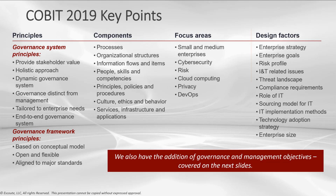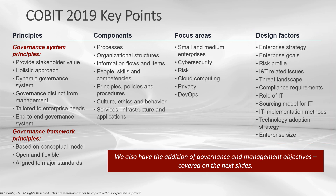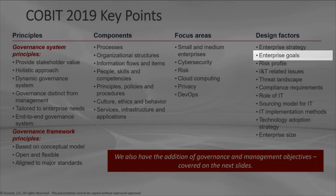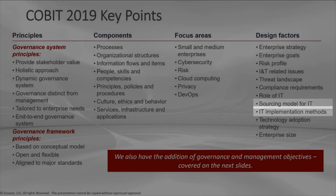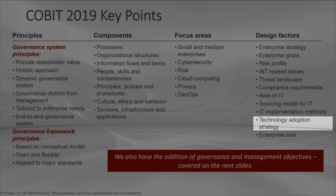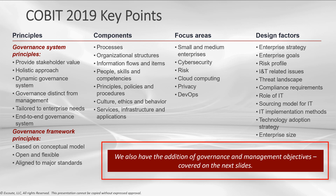One of my favorite areas are what we call design factors. Everybody wants a tailored governance system, and these design factors are attributes of your organization. Depending on what these attributes are and how you answer these design factors, they help you create a tailored governance system, specifically identifying the governance and management objectives and focus areas for your organization. Those design factors include: enterprise strategy, enterprise goals, risk profile, information and technology-related issues, threat landscape, compliance requirements, role of IT, sourcing model for IT, IT implementation methods, technology adoption strategy, and enterprise size.